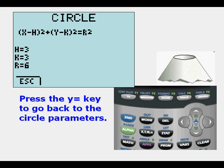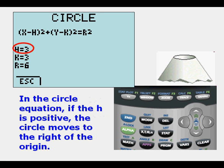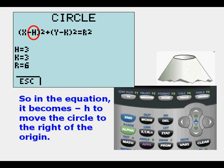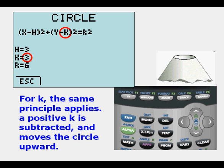We press the Y equals key to go back to the circle parameters. In the circle equation, if the H is positive, the circle moves to the right of the origin. So in the equation, it becomes minus H to move the circle to the right of the origin. For K, the same principle applies. A positive K is subtracted and moves the circle upward.